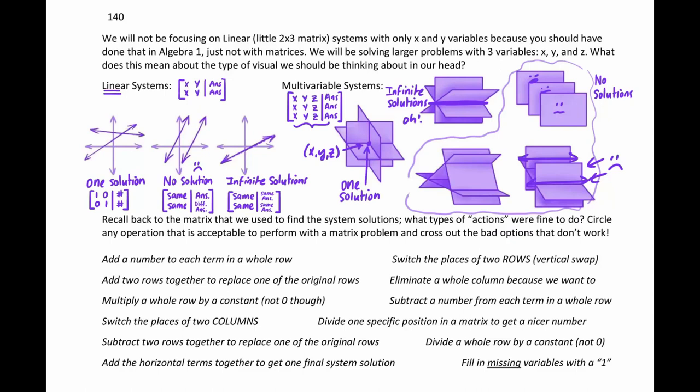So the first item, can we add a number to each term in a row? Think back through all the work we did. Did we ever plus two and plus two and plus two to an equation? If you think about how that affects the equation, that doesn't keep things balanced the way that you would expect them. So that is not something that you can do with a matrix. You can't just add a number to each piece of a row. It doesn't work like that.